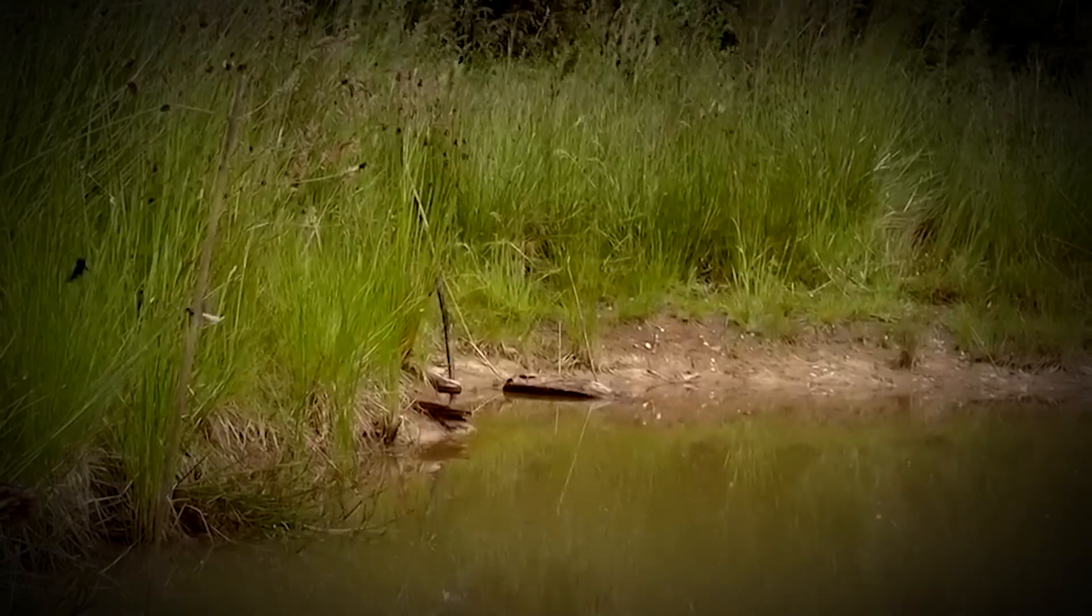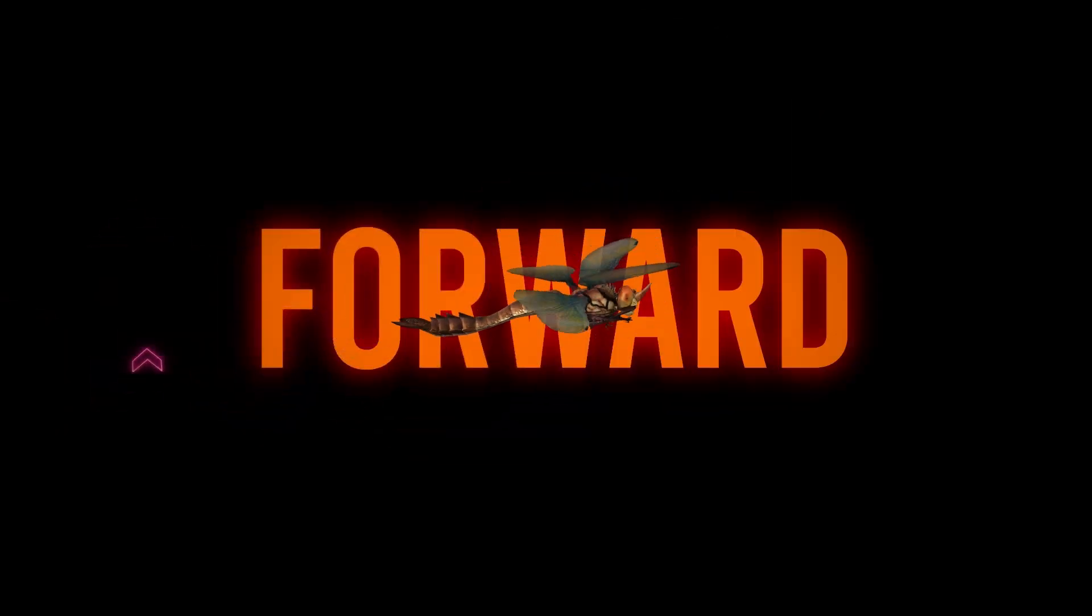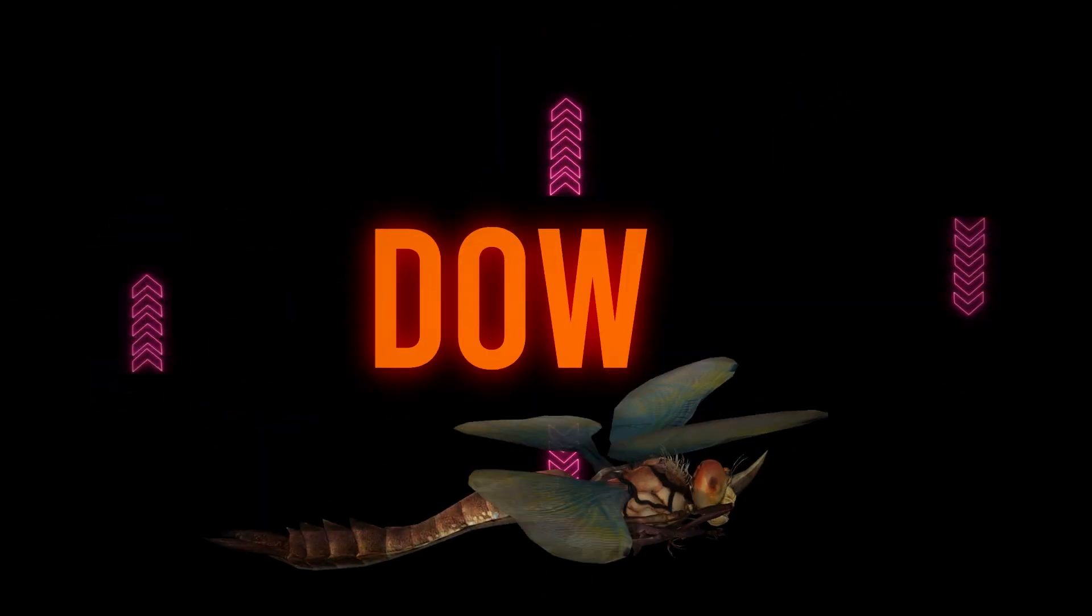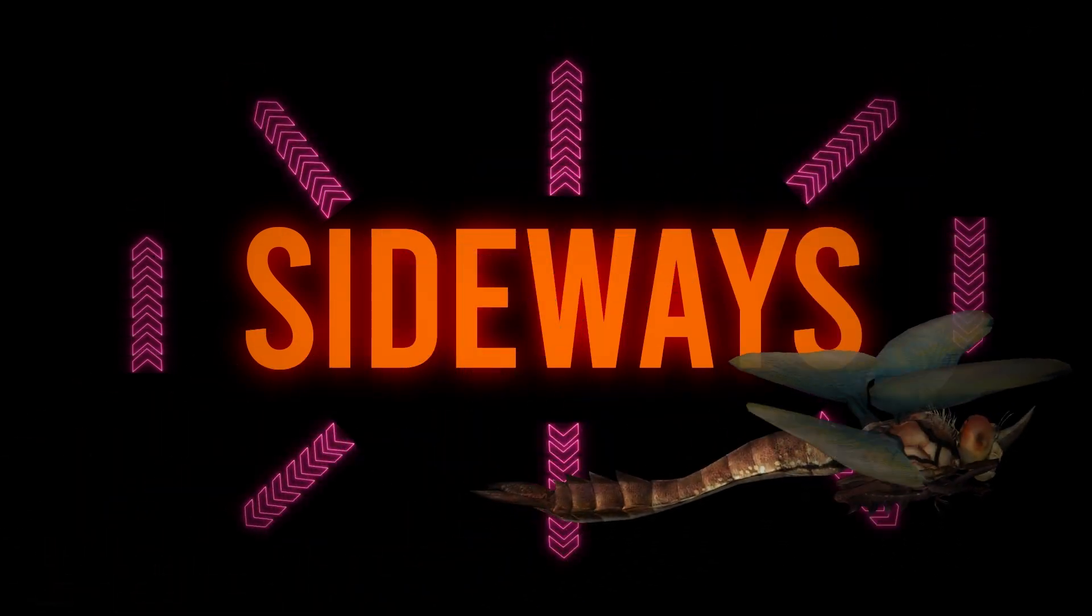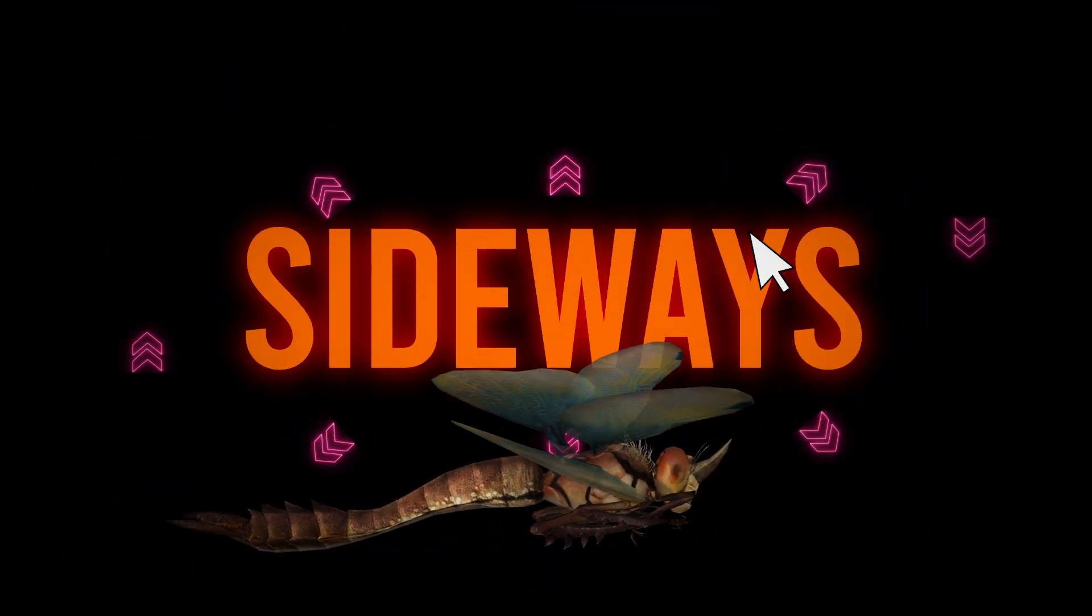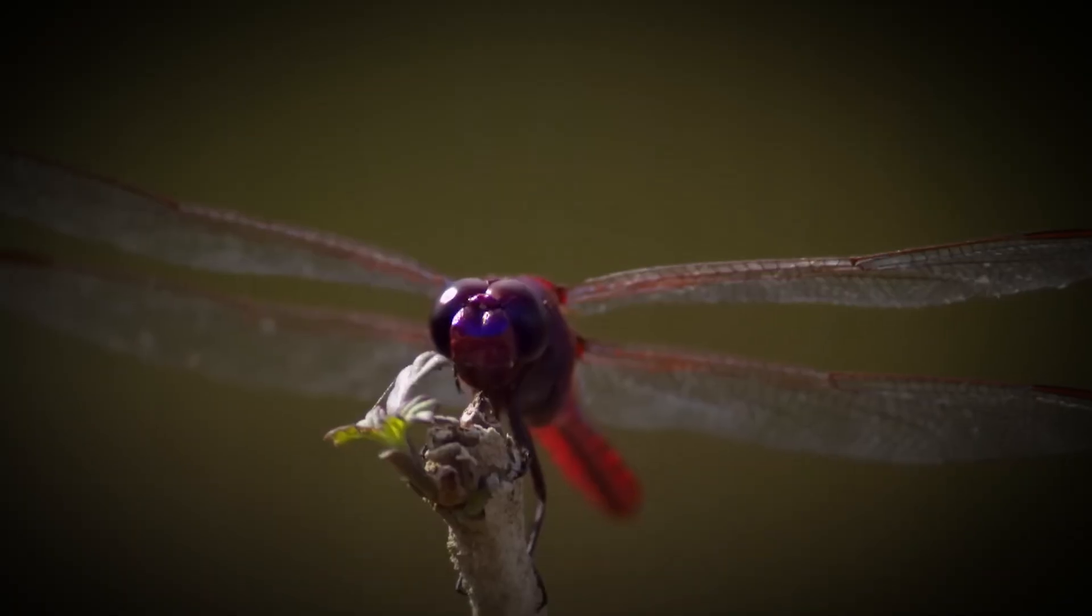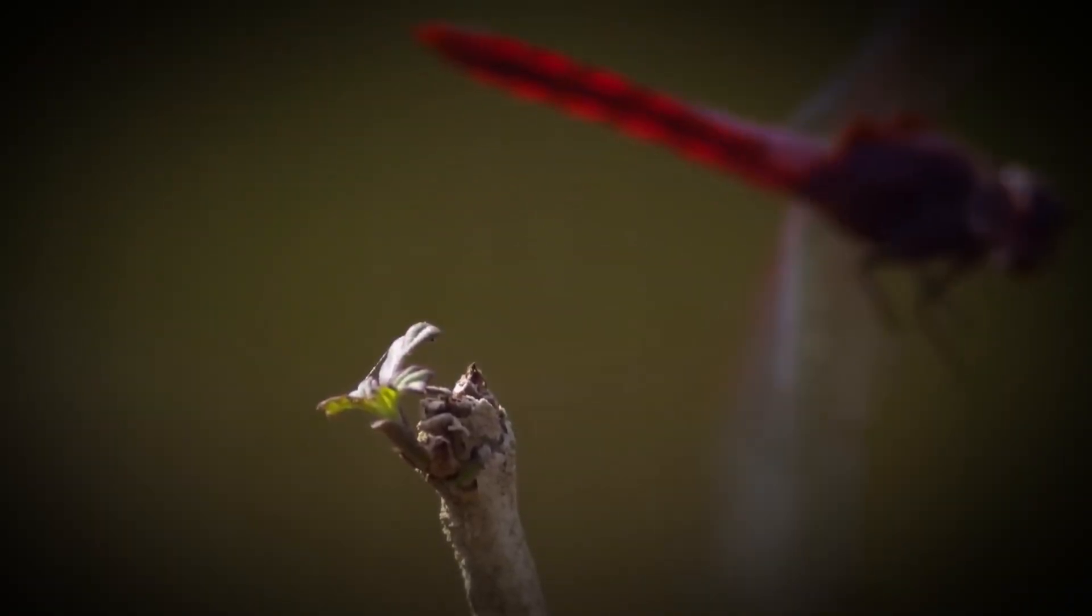When a dragonfly spots its prey, it takes off after it at lightning-fast speeds. It can fly forwards, backwards, up, down, and sideways, making it nearly impossible for its prey to escape. It even has specialized legs that it uses to scoop up its prey in midair.